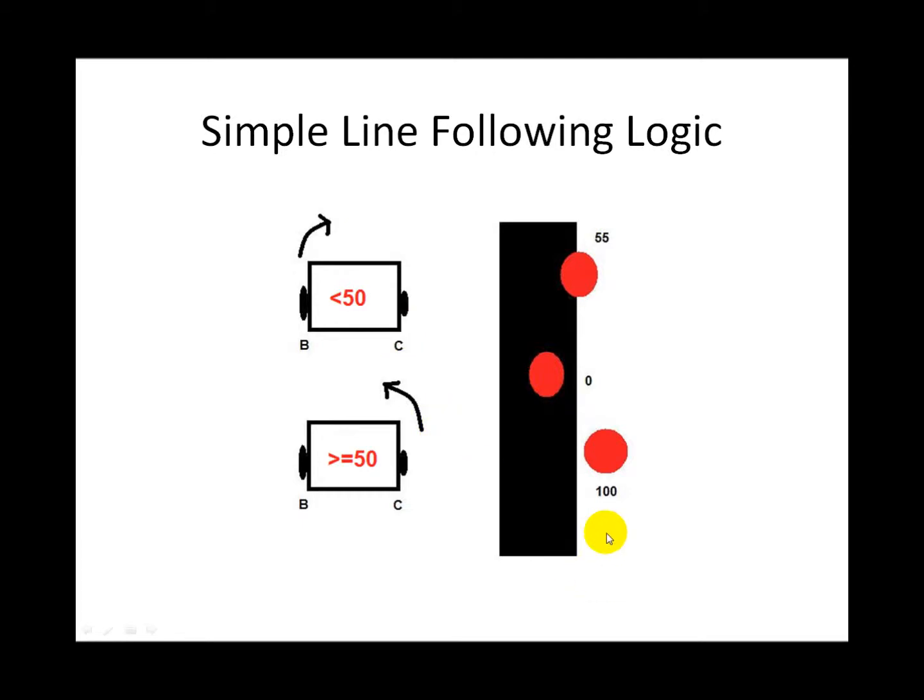When we say line following, more accurately it would be called edge following. Let's say our first light sensor reading is right here at 100, so the robot's going to turn to the left. It checks the light sensor value, and since it is less than 50, it's going to turn to the right. Our next sensor value might be 55, which will have it turn to the left. What happens is it zigzags back and forth about the edge of this line.